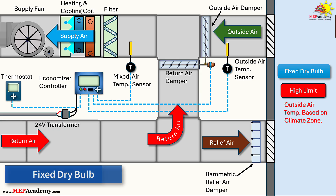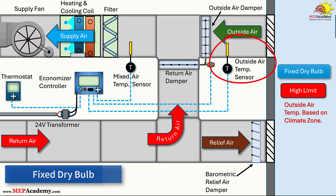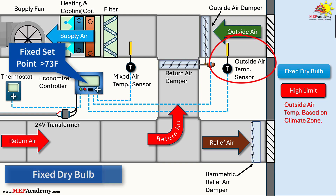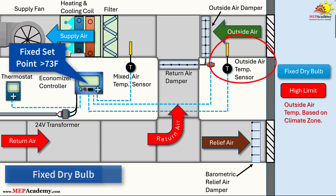Fixed Dry Bulb Strategy. The fixed dry bulb strategy is one of the simplest and most cost-effective high-limit controls for air economizers. It operates by measuring the outdoor air dry bulb temperature – the air temperature without considering humidity – and comparing it to a predetermined fixed set point. If the outdoor temperature exceeds this set point, the economizer disables, closing the outdoor air dampers and relying on mechanical cooling. This method requires only a single temperature sensor in the outdoor air stream, making it low-maintenance and inexpensive to install.